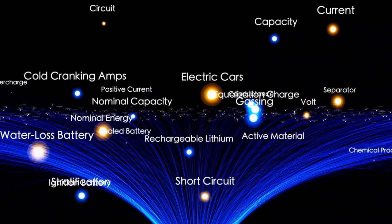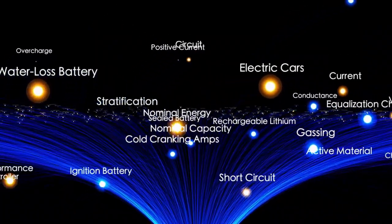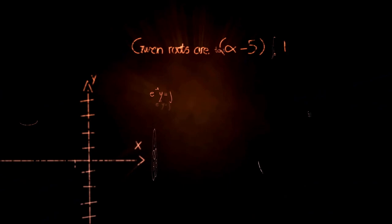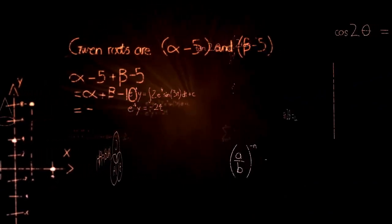If dark flow does exist, it could point to something very large and unknown lying beyond the observable universe, something that is pulling on galaxies and affecting their movement.